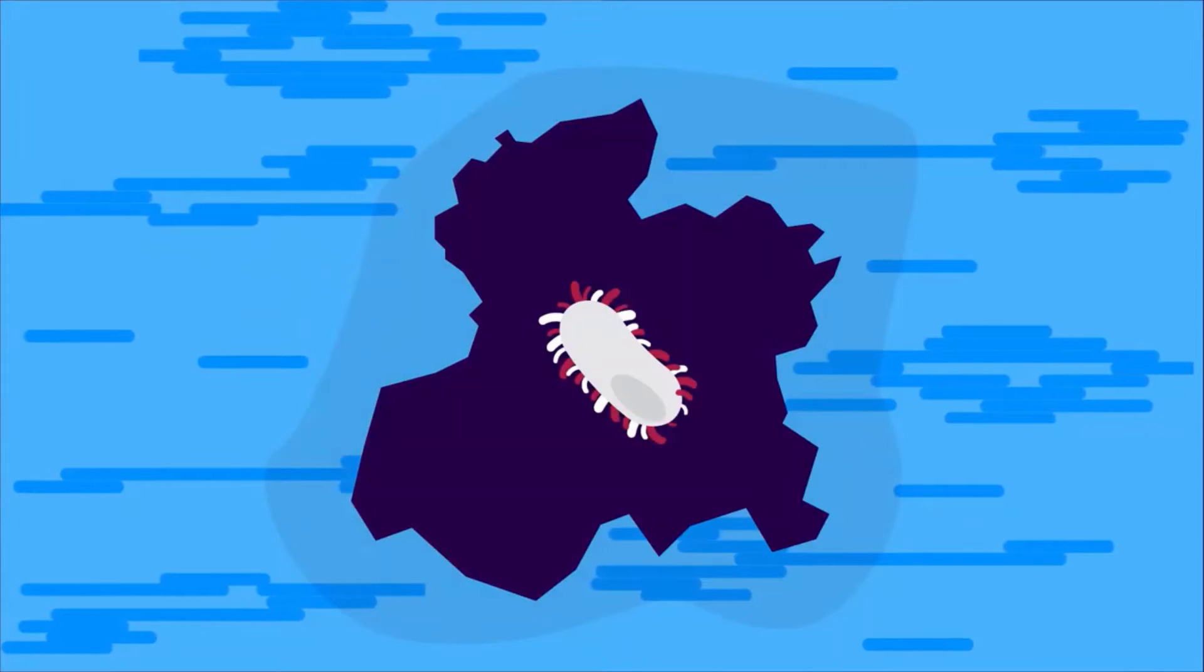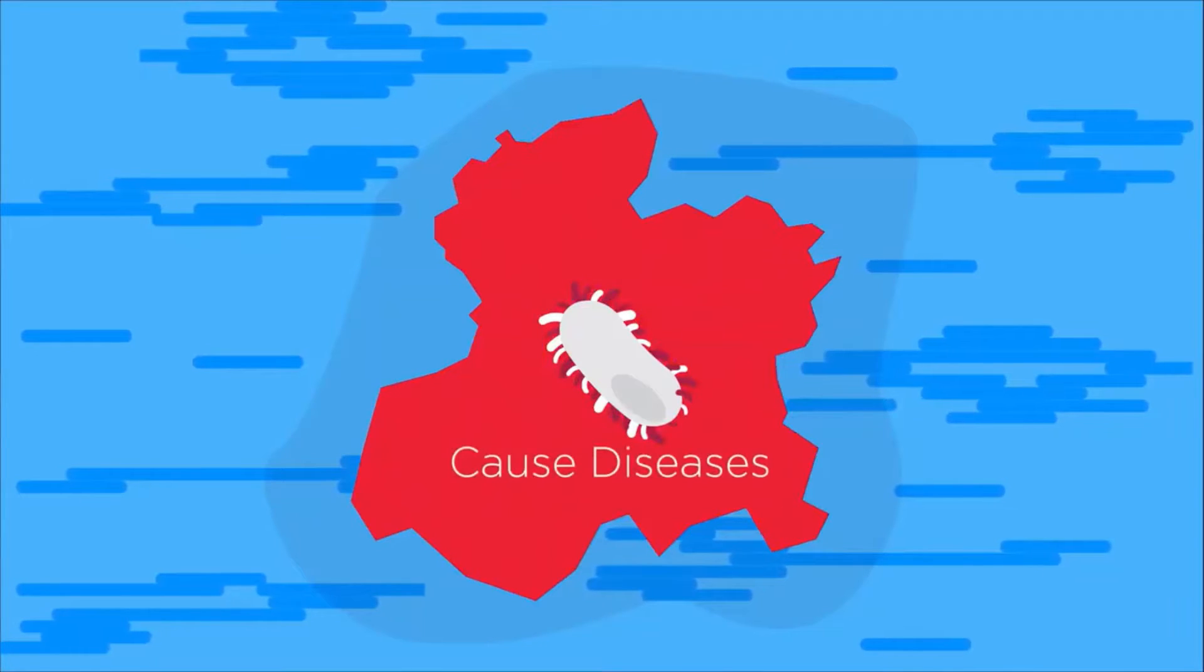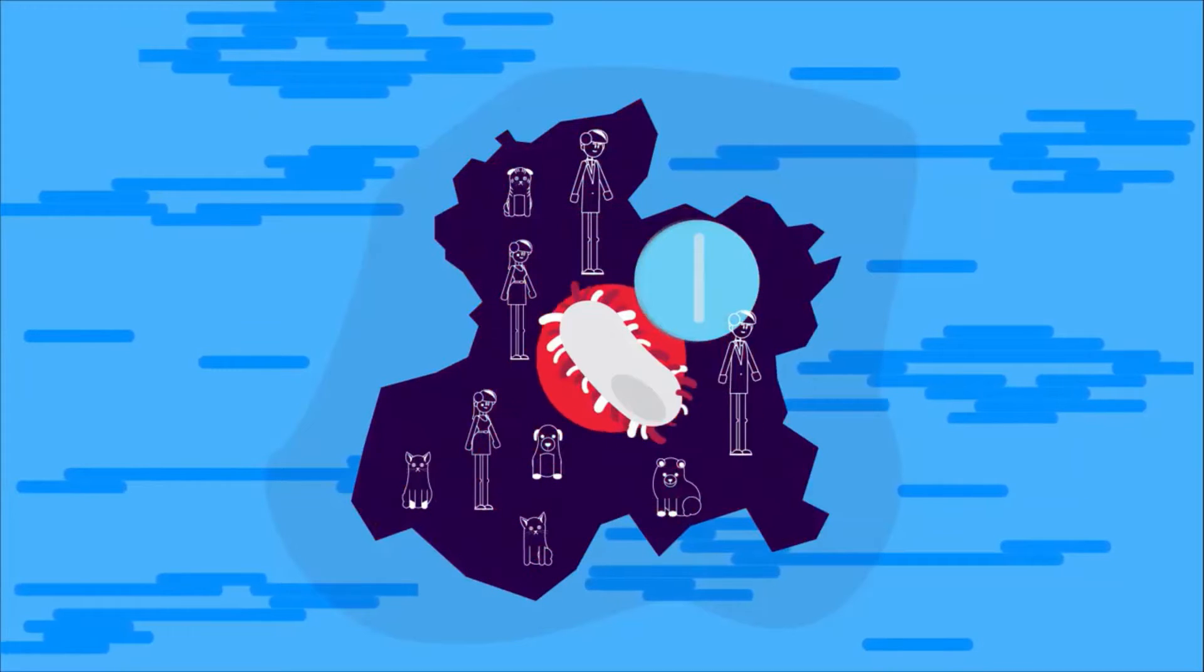Bacteria are single-celled organisms which can be pathogenic. That means that they can cause disease in humans and animals and antibiotics can be used to treat these diseases.